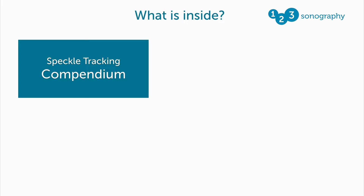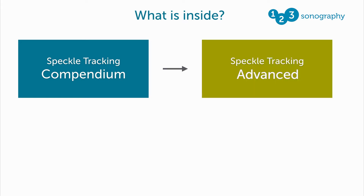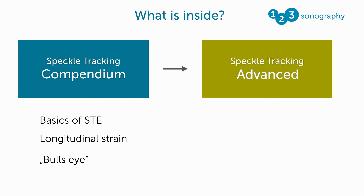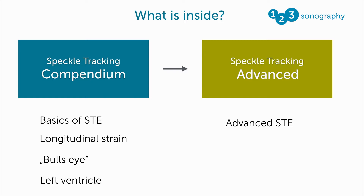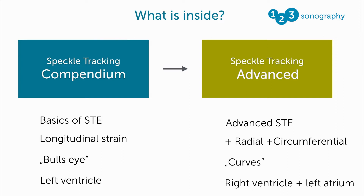What you see here is Part One — the compendium, the basics of speckle tracking. If you want to go further, we have Part Two with more advanced content. In the compendium you'll learn the basics, focusing mainly on longitudinal strain, the bullseye display, and the left ventricle. In Part Two, we expand on this knowledge with advanced technologies, radial and circumferential strain, strain curves, and other chambers.